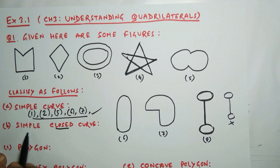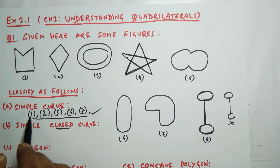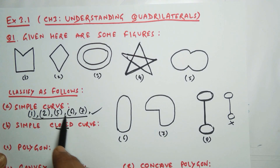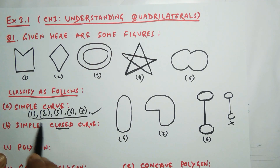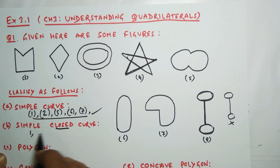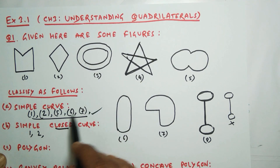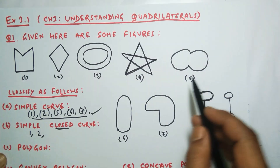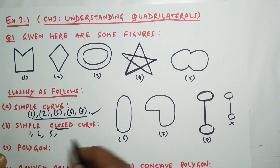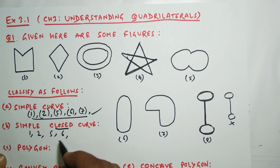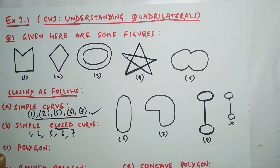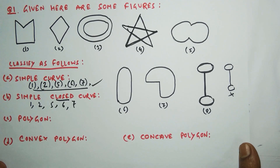So the simple curves are only those we identified. Now, out of these simple curves, which are closed? Simple closed curves are the ones which are closed. From our simple curves — one, two, five, six, and seven — number one is closed so it is a simple closed curve, number two is simple and closed, five is closed, six is closed, and seven is closed. So one, two, five, six, and seven are all simple closed curves.